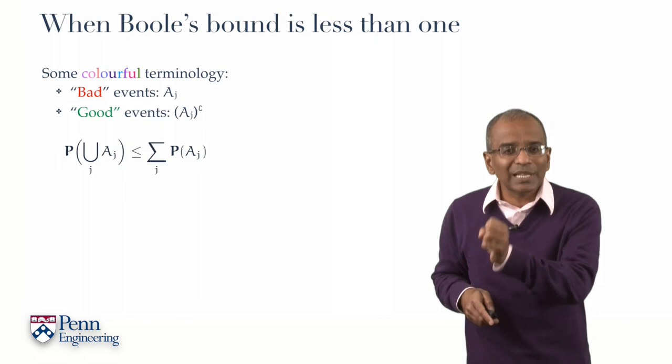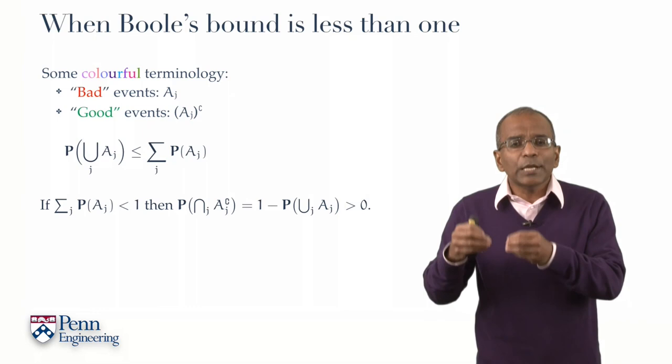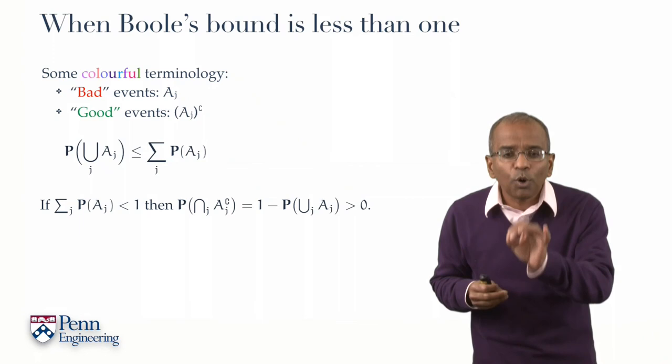And so this says that if the sum on the right is no bigger than one, then the probability that no bad event occurs is strictly positive.